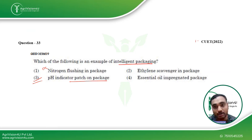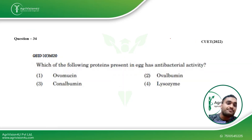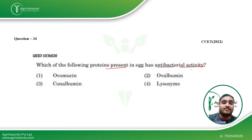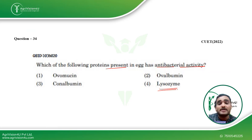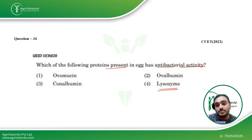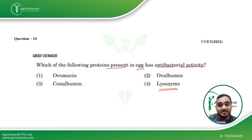This question was asked in CUET 2022. Coming to the next question: which of the following proteins present in egg has antibacterial activity? This is a very easy question, and students from plus 2 will also be aware of it. Lysozyme is the main protein responsible for antibacterial activity inside the egg. We discussed this topic when we were covering egg composition and nutrition factors. This question was also asked in CUET 2022.